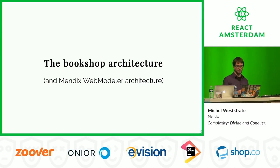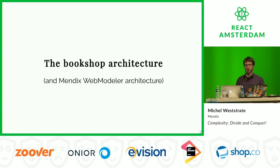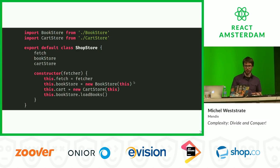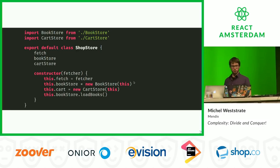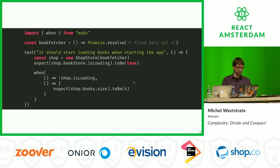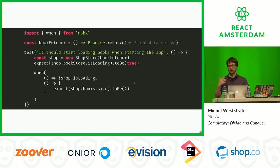Let me show how to solve that, but first a bit more about this bookshop architecture - which is also the architecture behind the Mendix Web Modeler, just a lot more simplified. We started with one store capturing the entire logic and state of the application called the shop store, which has two smaller stores: one containing the books and one containing the cart entries. Because data fetching happens in our stores instead of in our components, we can write unit tests against the store to verify data fetching without having a UI.